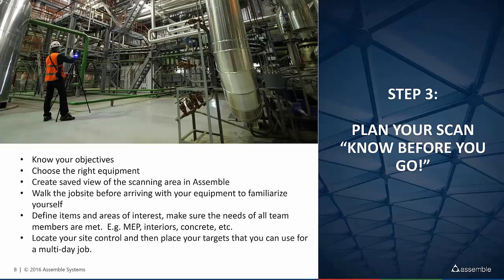Knowing our objectives helps us understand what type of equipment we need. We also recommend creating safe views of the scanning area in Assembl. A safe view is essentially filtering the data to the area of interest. On large sites — refinery or commercial construction — models are very big, but we may be scanning only a part or section of that area. We save that area of interest in Assembl so we know exactly where we want to scan.